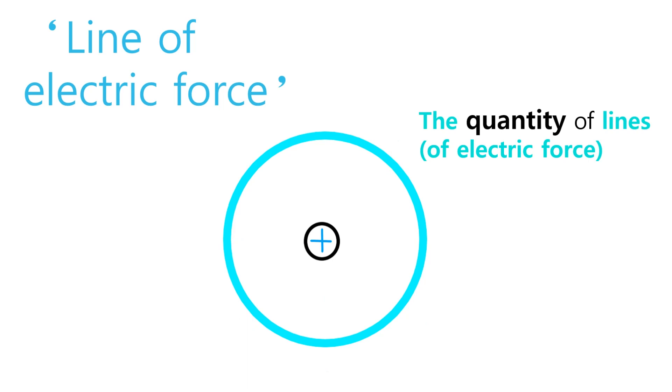Then if there is a closed surface which doesn't have any holes, like this, the closed surface contains this positive charge. And at this situation, the lines of electric force pass this surface. Now we may define the quantity of lines, which is called flux.